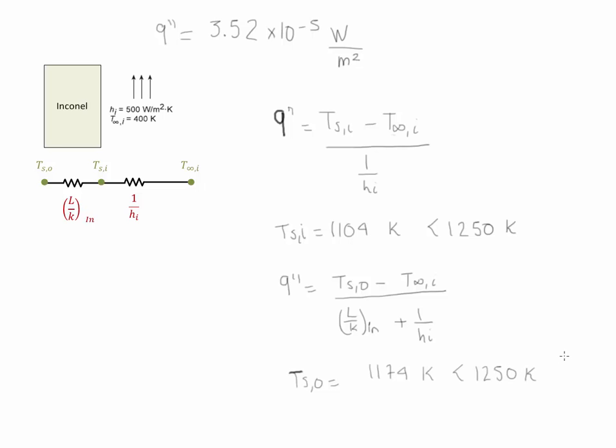This indicates that by adding the thermal barrier coating to the blades, the blades are able to resist higher values of temperature outside and be able to maintain the temperature below a required value of 1250 K, therefore improving the performance of a gas turbine engine.